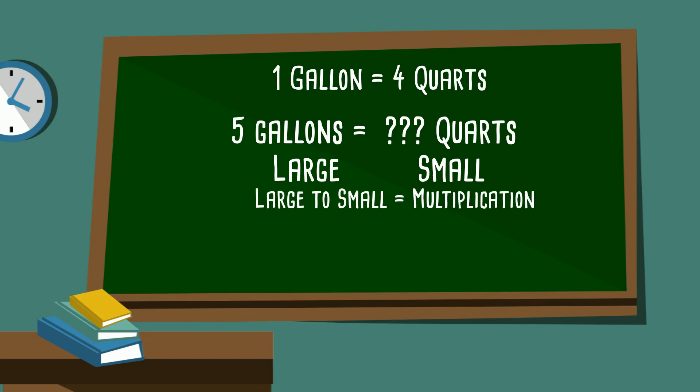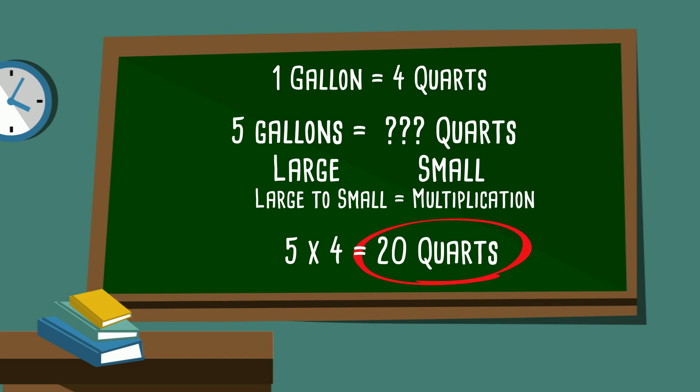So we will multiply five gallons times four, because it takes four quarts to equal one gallon, and that equals 20 quarts.